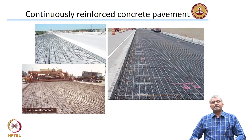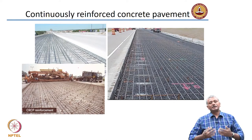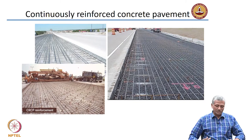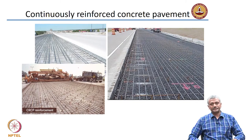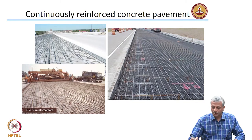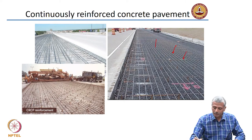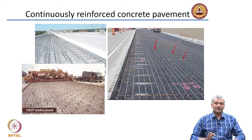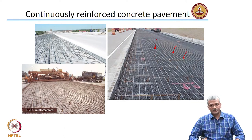A continuously reinforced concrete pavement is nothing but a regular reinforced concrete slab which has reinforcement in both directions. In a close-up, the reinforcement is actually extending in both directions. So here there are no joints.